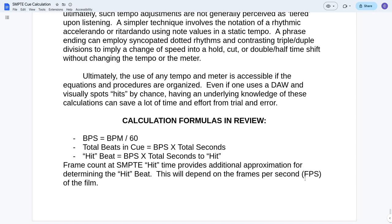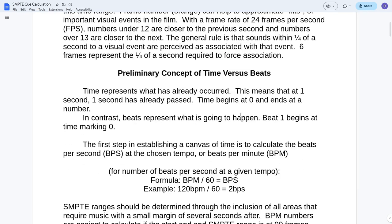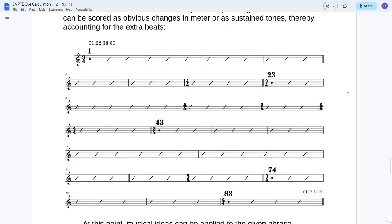Ultimately, the use of any tempo and meter is accessible if the equations and procedures are organized. Even if one uses a DAW and visually spots hits by chance, having an underlying knowledge of these calculations can save a lot of time and effort from trial and error. So these are the review of the calculations. BPS, beats per second, is determined by beats per minute divided by 60. Total beats in a cue is the BPS number times the total seconds of the cue. A hit beat is determined equals the beats per second times the total seconds to a hit.